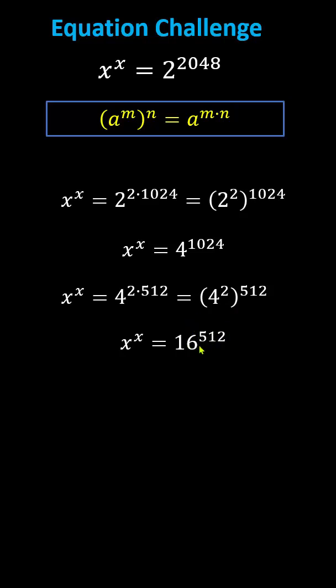From here, we can write 16 to the power of 512 as 16 to the power of the product of 2 and 256, which is equal to the square of 16 to the power of 256.